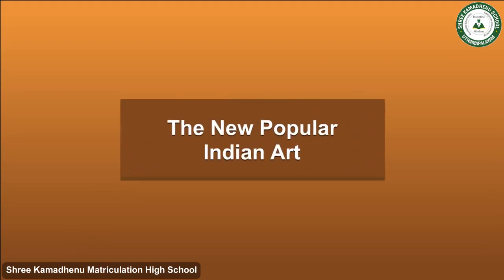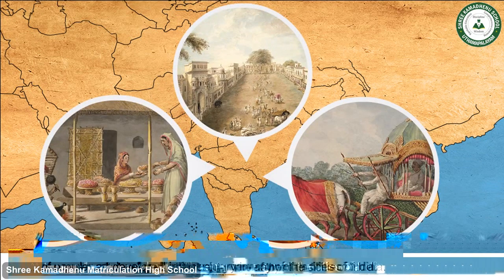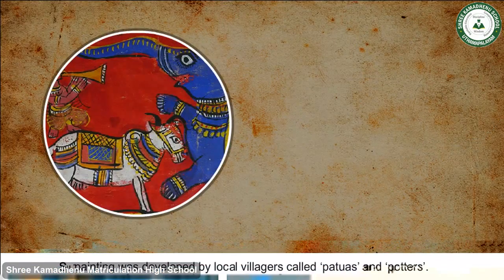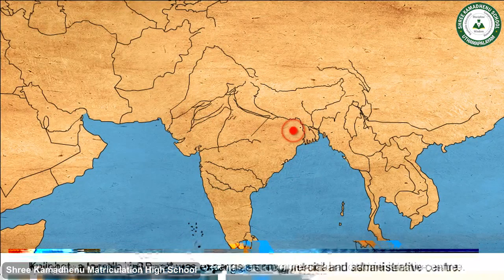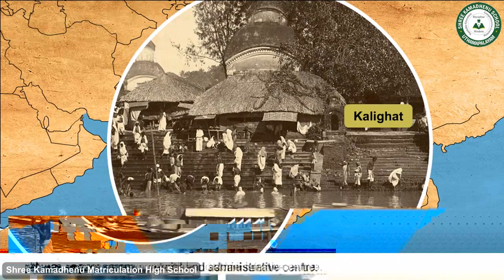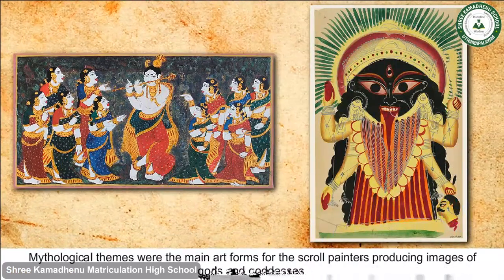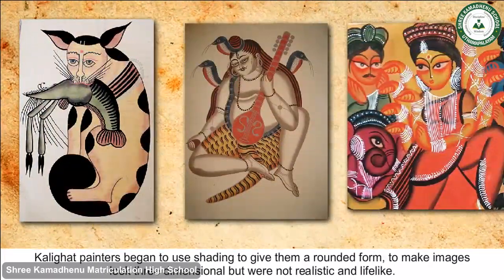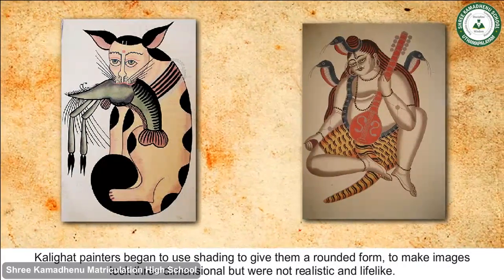A new world of popular art developed in the 19th century in many Indian cities. Scroll painting was developed by local villagers called Potas or Patters. Kalighat, a temple in Bengal, was expanding as a commercial and administrative centre. Mythological themes were the main art forms for scroll painters producing images of gods and goddesses. Kalighat painters began to use shading to give figures a rounded, three-dimensional form, though the images were not fully realistic or life-like.